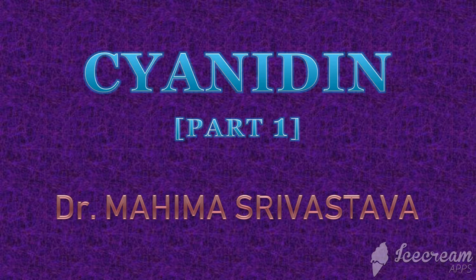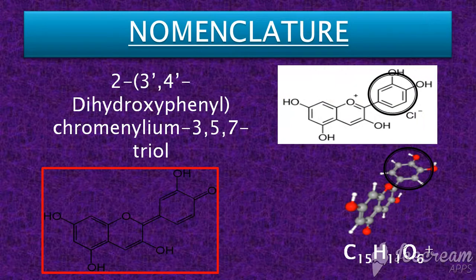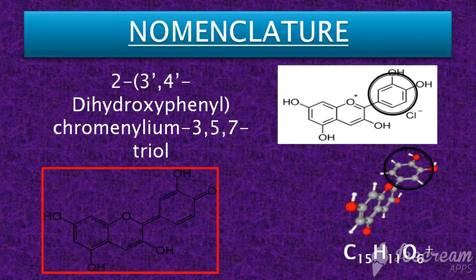In this video, we shall study about Cyanidin, which is a plant pigment. The IUPAC name of Cyanidin is 2-(3,4-dihydroxyphenyl)-chromenylium-3,5,7-triol ion. Chromenylium is an aromatic cation composed of a benzene ring fused to pyrylium, which is a heterocyclic ring with oxygen as heteroatom carrying a positive charge.